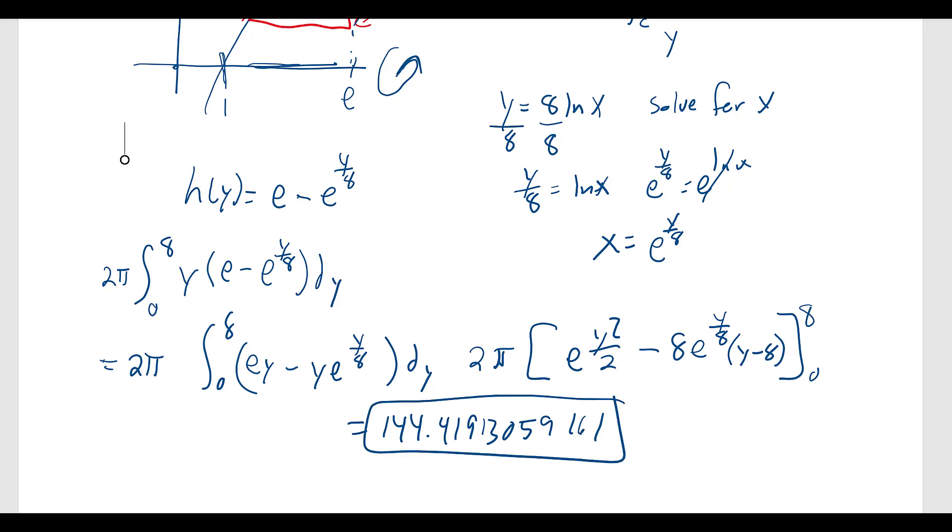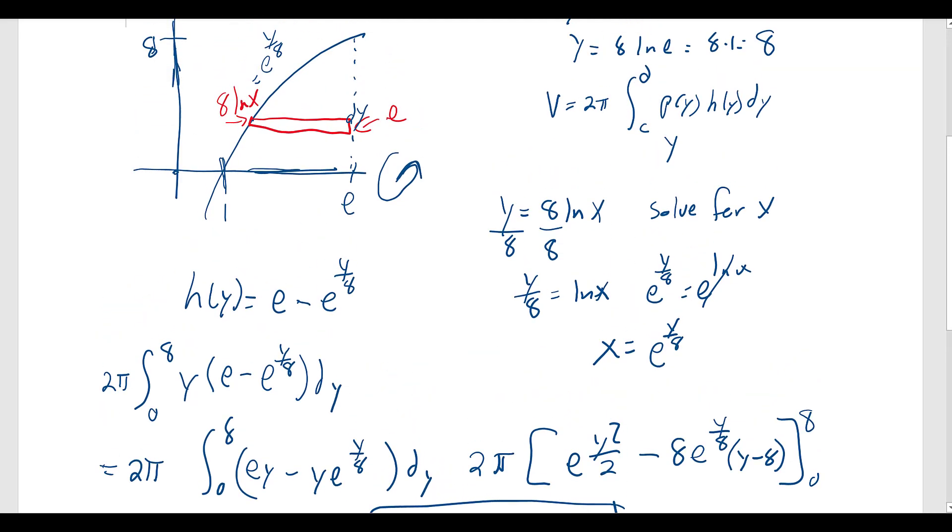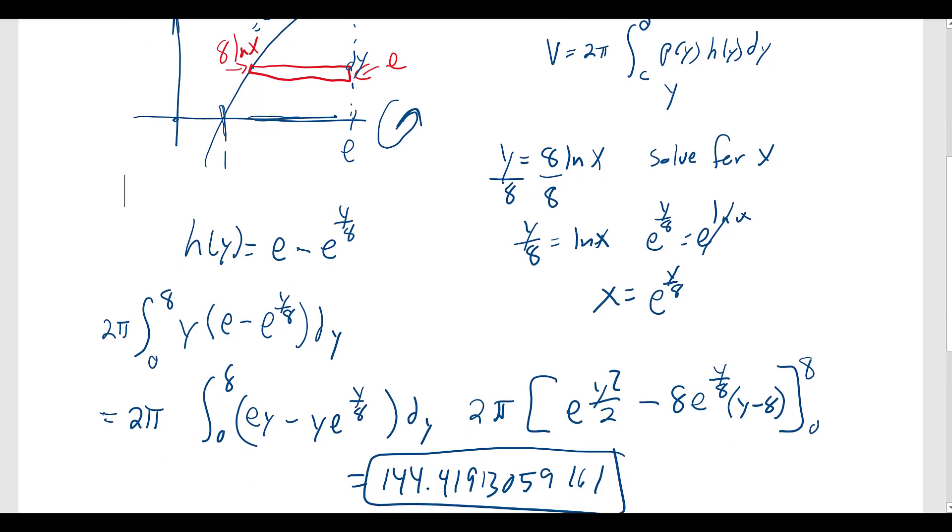So I know the hard part about this is coming up with the different parts. Again, because it's going around the x-axis, we integrate with respect to y. And we find that rectangle that's parallel to the x-axis. And so that has to be in terms of y. On the right side, it was a constant. On the left side, it was a non-constant function. I hope that helps with any other problems like this.